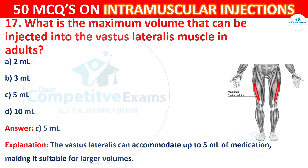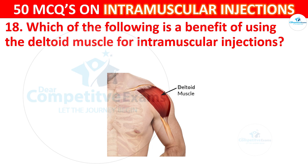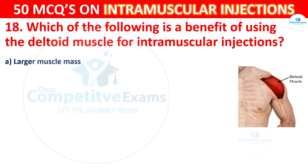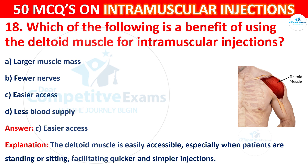Question 18: Which of the following is a benefit of using the deltoid muscle for intramuscular injections? Options are: larger muscle mass, fewer nerves, easier access, or less blood supply. The correct answer is C, easier access. The deltoid muscle is easily accessible, especially when patients are standing or sitting, facilitating quicker and simpler injection.